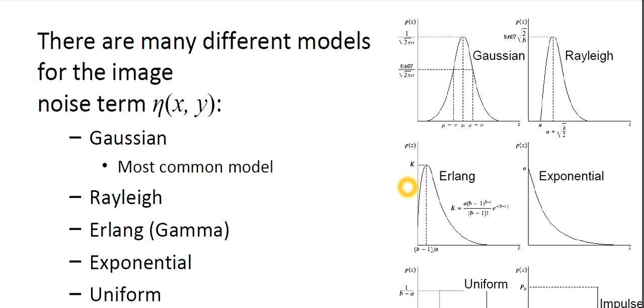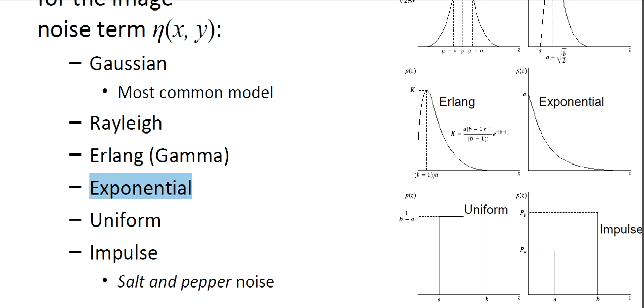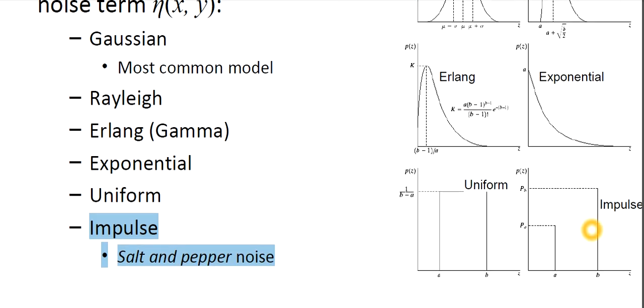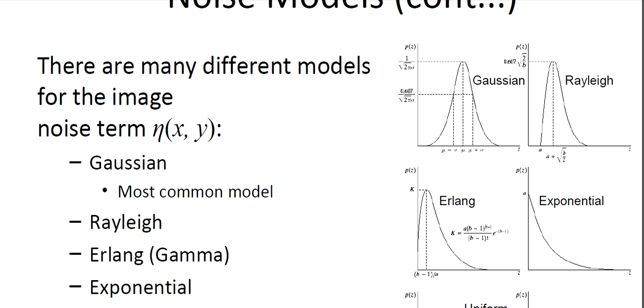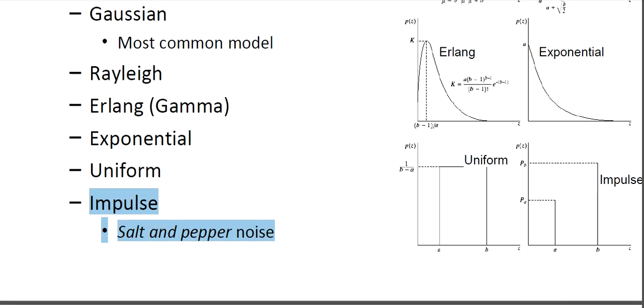There are different models for the image noise term η(x,y). We have Gaussian, which is the most common. Then we have Rayleigh, Erlang (also known as gamma), exponential, uniform, and impulse (also known as salt and pepper noise, which is also very common). Look at the diagrams here. This is the Gaussian version, Rayleigh, Erlang, exponential, uniform, and impulse. Mostly you need to know Gaussian, how the curve is going, the exponential, and the impulse.